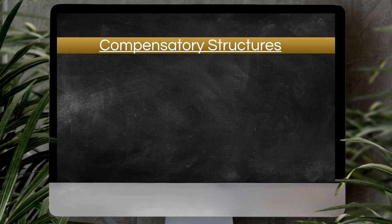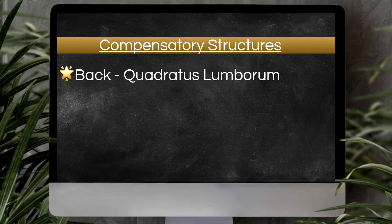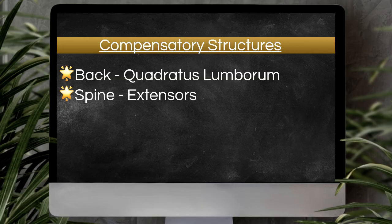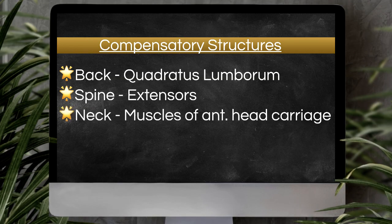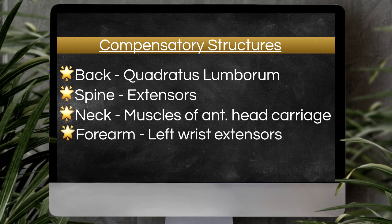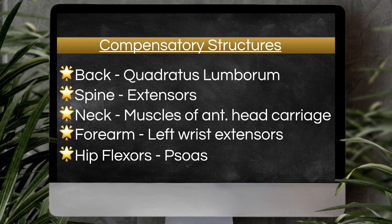There are many structures involved here. The first being the back — the quadratus lumborum — and her spine extensors, especially with the rotation of her body and her head in her left hand. Her neck muscles are being compromised as she sits with an anterior head carriage. Her left wrist is in extension with her head in her palm. Her hip flexors — because she's sitting, her psoas is being shortened all day long.